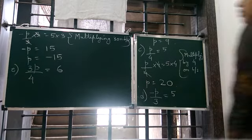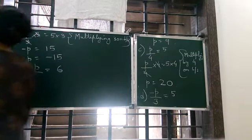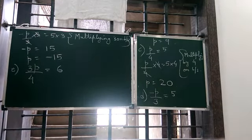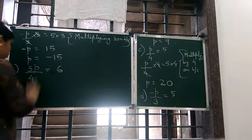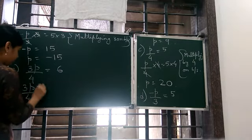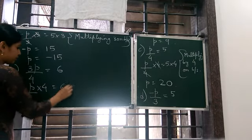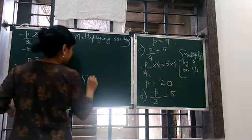3p upon 4 is equal to 6. Now what we do, we have to remove this 4 from here. So we multiply 4 on both sides. 3p upon 4 into 4 is equal to 6 into 4, and we write here.